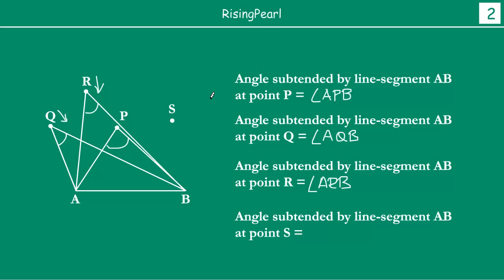Now, friends, our last point is S. So, the angle subtended by line segment AB at point S — similarly, Dostho, as you know by now — you join AS and you join BS. So, yeh jo angle hai, Dostho, this angle basically gives the angle of line segment AB from S — that is, angle ASB.